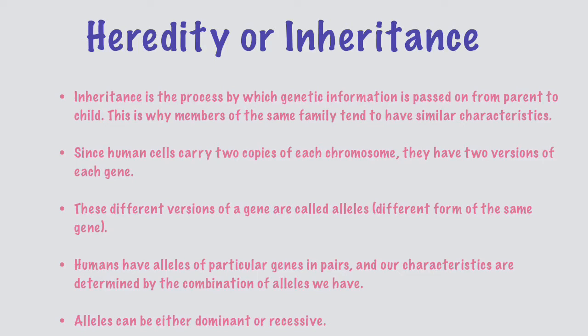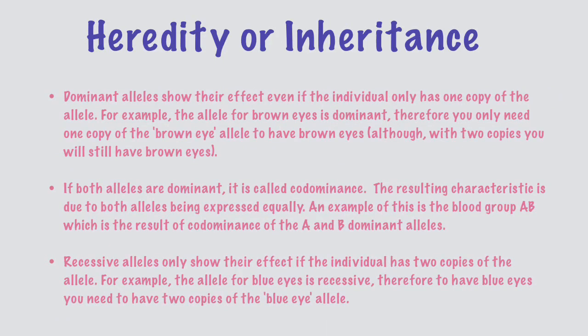Alleles can be either dominant or recessive. Dominant alleles show their effect even if the individual only has one copy of the allele. For example, the allele for brown eyes is dominant. Therefore, you only need one copy of the brown eye allele to have brown eyes, although with two copies you will still have brown eyes.